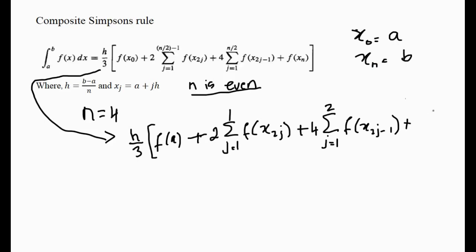So that's just going to end up being f(b). So that's basically our composite rule.